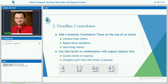Number two is a simple one: deadline countdown. You can do this in emails and on landing pages. Adding a countdown timer at the top of an email creates a sense of urgency. If you have a limited time offer, a discount, or if you're hosting your own webinar and registration deadlines are coming up, you can include a deadline countdown. It changes each time the email is opened, so as each day passes it gets a day closer to that event. So people think, I've got to sign up now before I miss out.